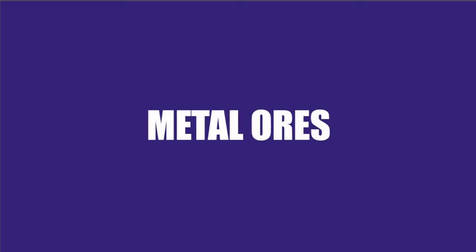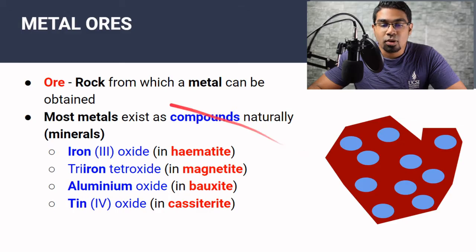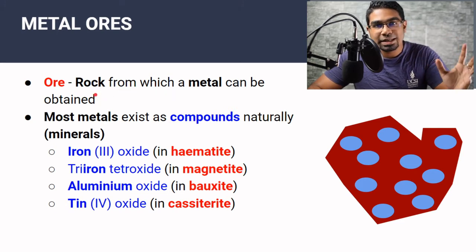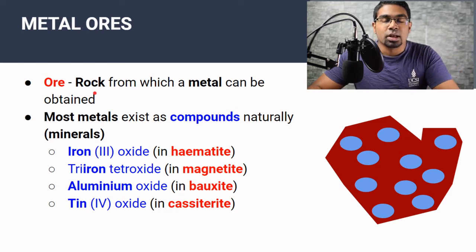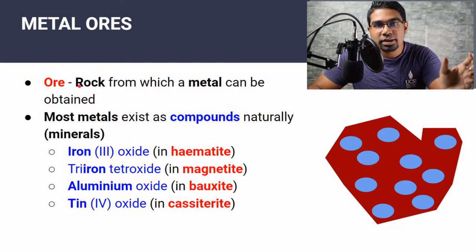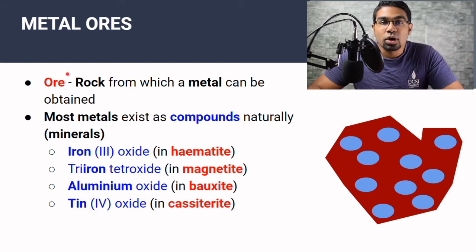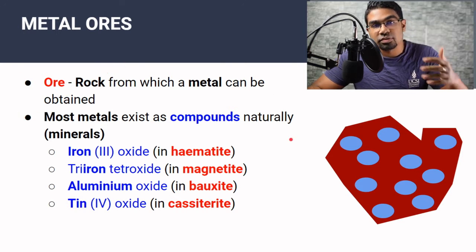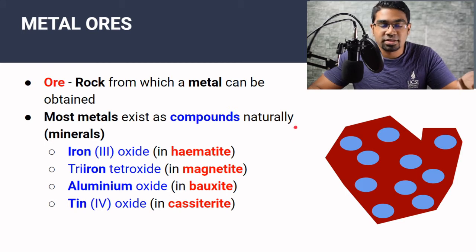First, let's look at the general concept of metal ores — what they are and how extraction takes place. Metal ores are just rocks from which metals can be obtained; rocks which contain metal compounds. Most metals are reactive and they don't exist in pure form. The only metals that exist in elemental state are gold and silver. The other metals normally exist as compounds because they would have reacted to form oxides, sulfides, carbonates, and so on.